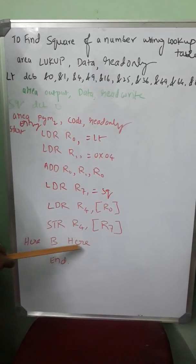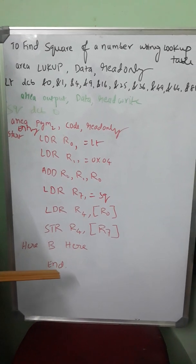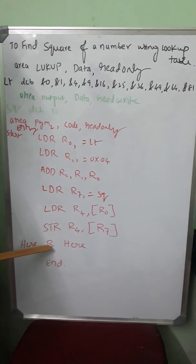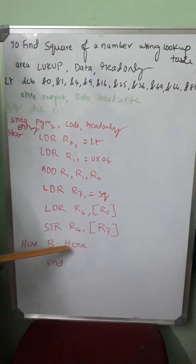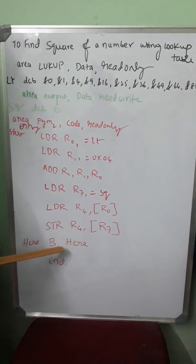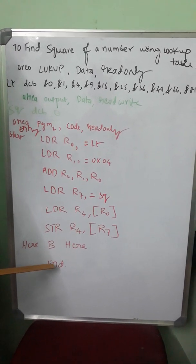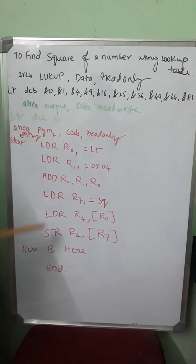HERE B HERE is the instruction, as I have already repeatedly told you, that it is the infinite loop location. It keeps on branching to the same location. END is the assembler directive which ends the text of the program.